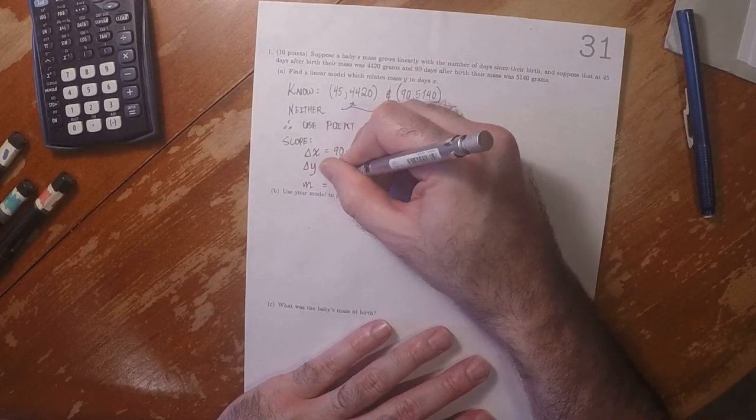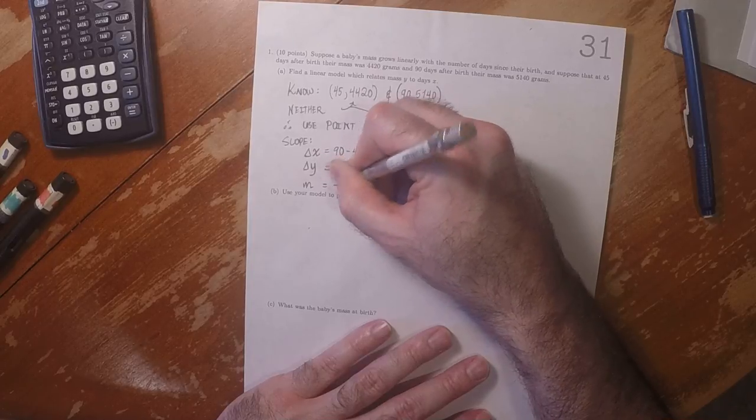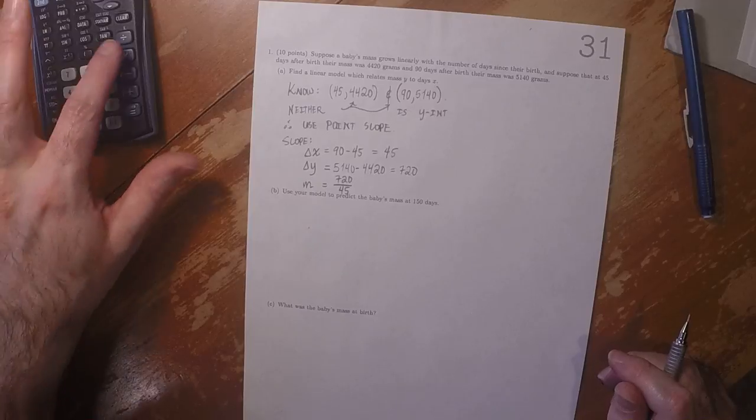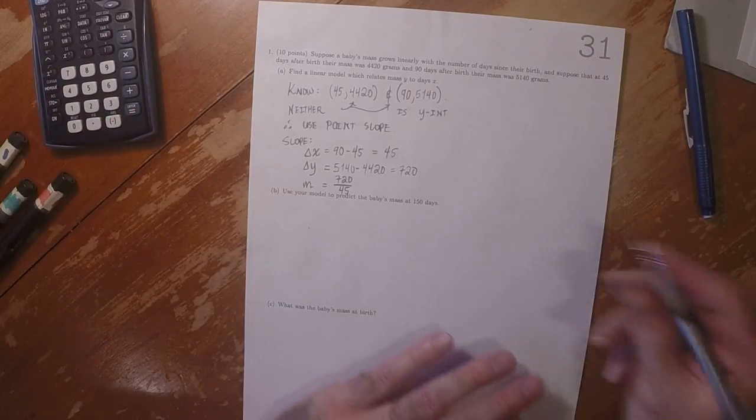Therefore, the slope is 720 over 45, which is 16.